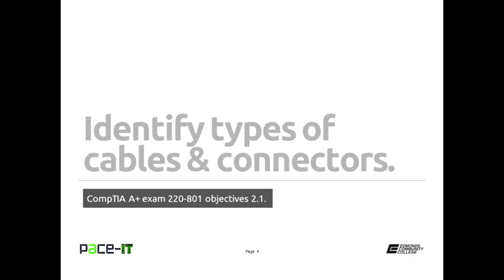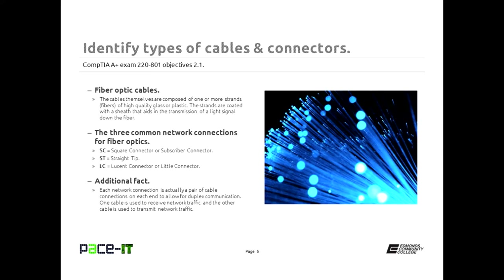Let's jump into objective 2.1, identifying types of cables and connectors. We're going to start by talking about fiber optic cables. The cables themselves are composed of one or more strands of fibers that are very high quality glass or plastic. The strands are coated with a sheath that aids in the transmission of the light signal down the fiber from one end to the other.